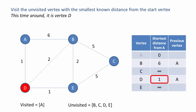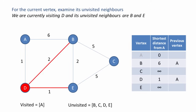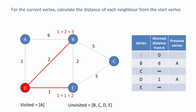Now the algorithm repeats. We visit the unvisited vertex with the smallest known distance from the start vertex — this time it's vertex D. For the current vertex, we examine its unvisited neighbours. We're currently visiting D and its unvisited neighbours are B and E. We then calculate the distance of each neighbour from the start vertex. The distance of B from A is 1 plus 2, giving a total distance of 3. The distance from A to E is 1 plus 1 from D to E, giving a total distance of 2.